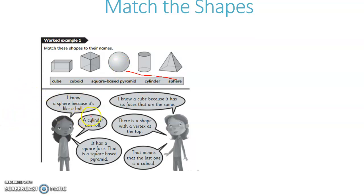A cylinder can roll. Sphere is a ball — of course, we know a sphere can roll. Similarly, a cylinder will also roll. So, this is a cylinder.